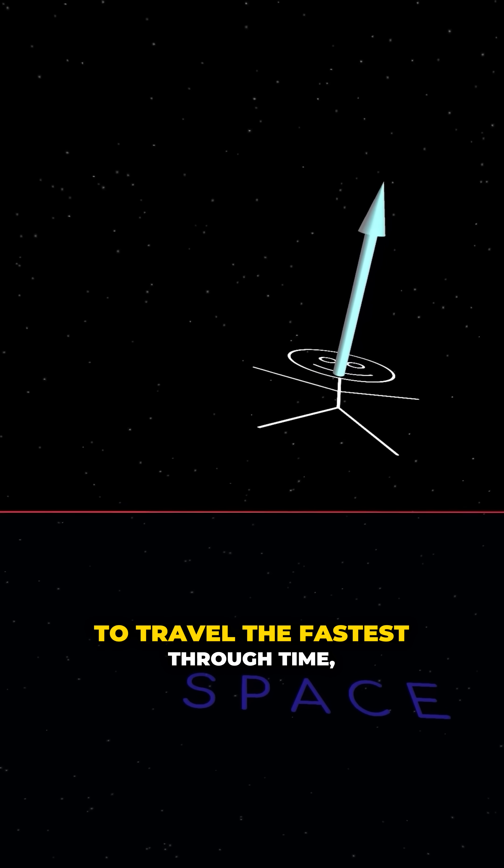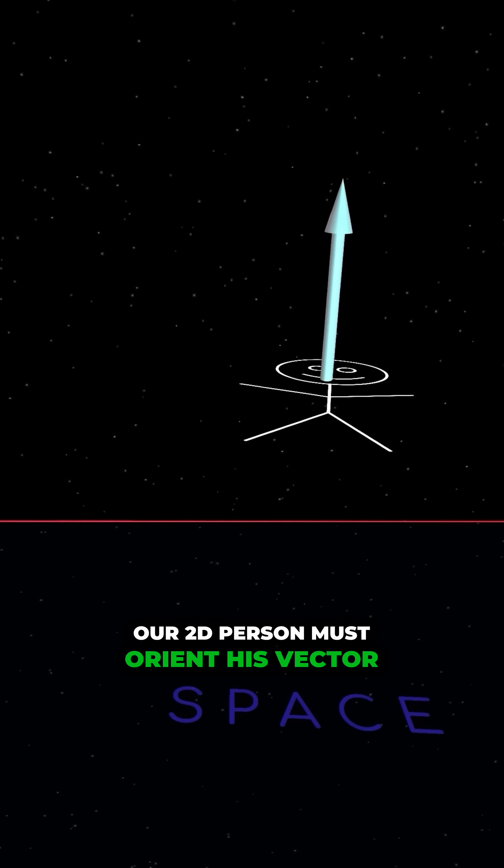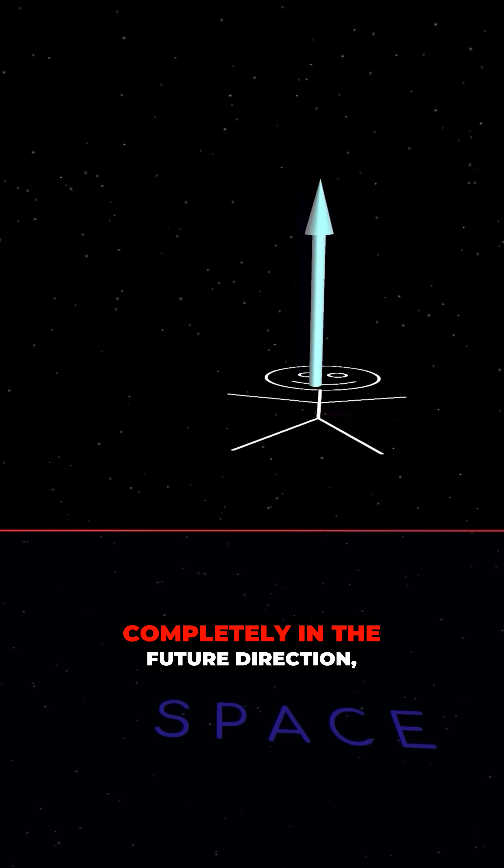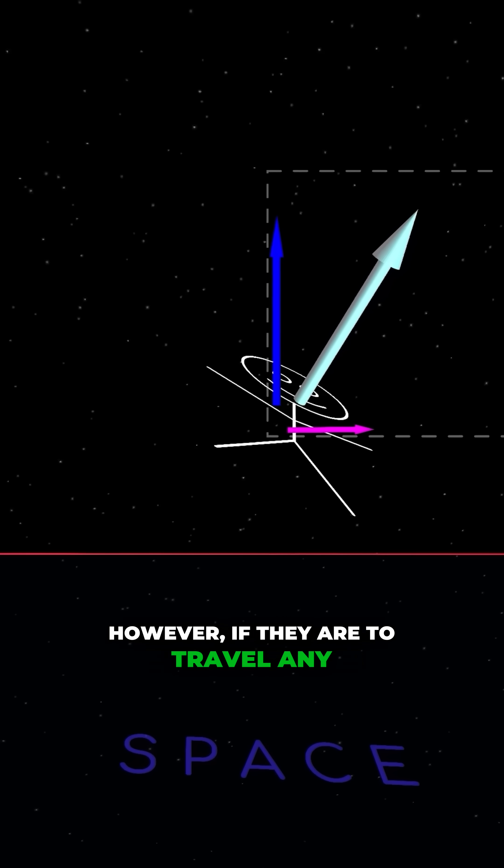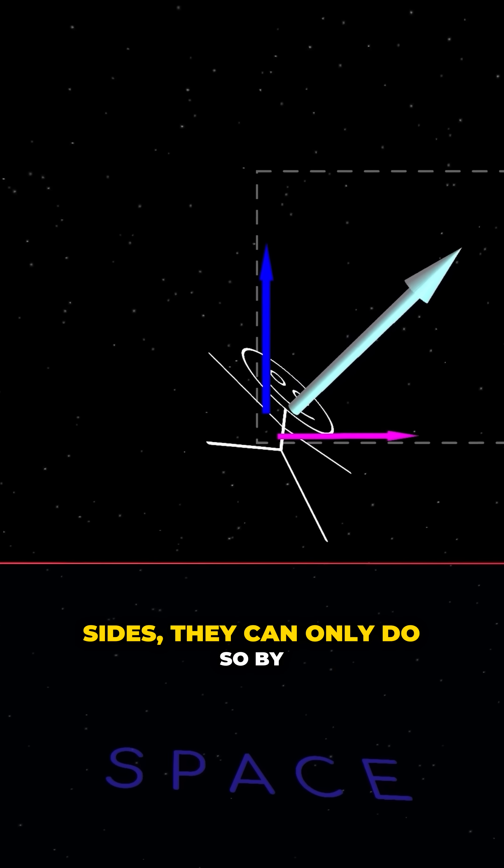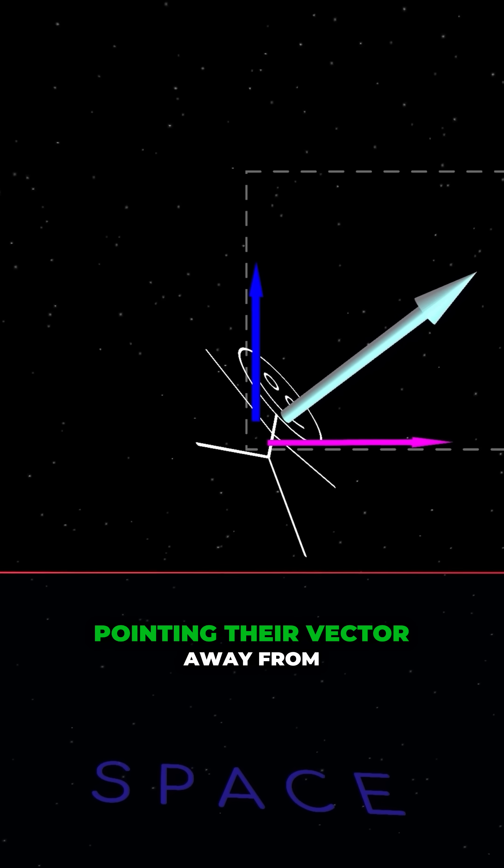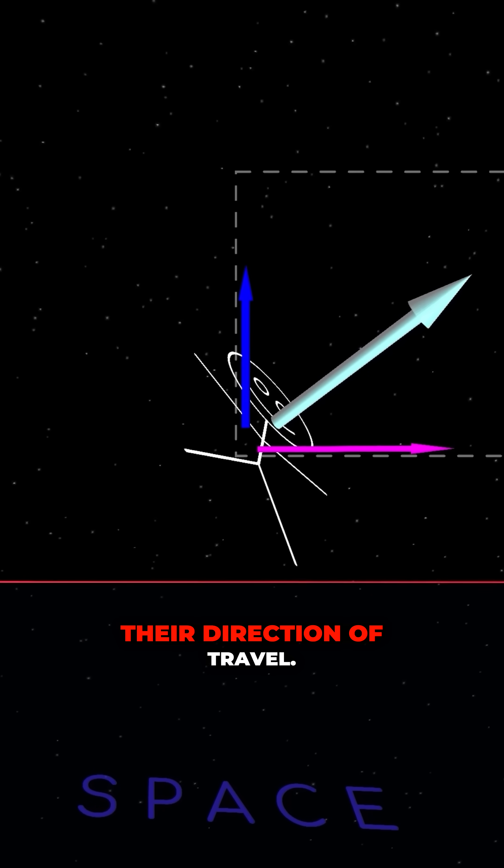To travel the fastest through time, our 2D person must orient his vector completely in the future direction or upwards. However, if they are to travel any amount in either direction to their sides, they can only do so by pointing their vector away from their direction of travel.